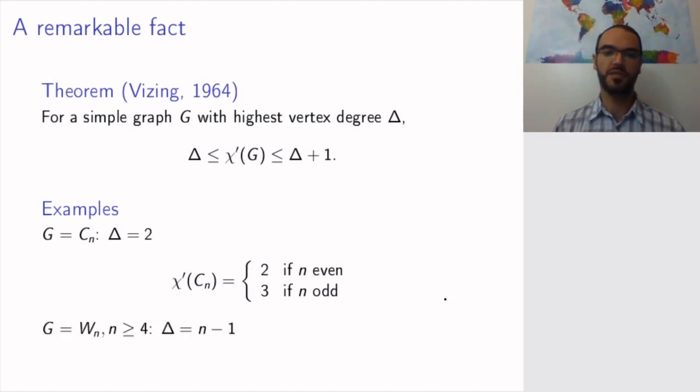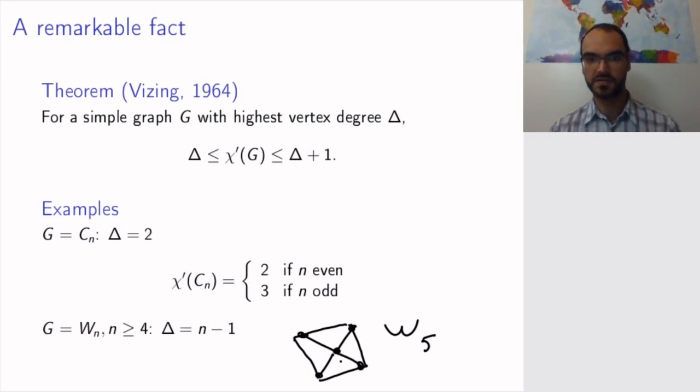For wheel graphs with at least n equals 4, then the highest vertex degree is n-1 because it's the vertex in the middle that attaches to all other vertices. And so this is W5. So I will definitely need four different colors for these edges, but then this is enough because I have a cycle and for n greater than or equal to 4 I will have at least three colors already used for the edges going to the center so that will not change on the cycle. So in this case the chromatic index is n-1.